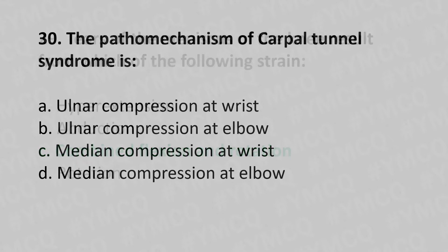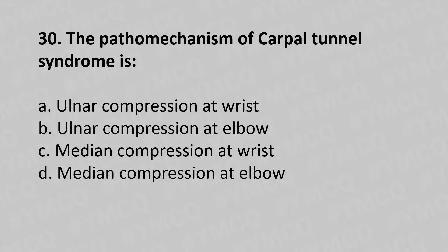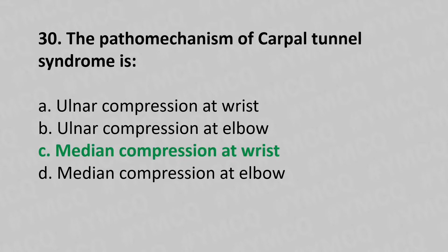Moving to our 30th question: the pathomechanism of carpal tunnel syndrome is option A ulnar compression at the wrist, option B ulnar compression at the elbow, option C median nerve compression at the wrist, option D median nerve compression at the elbow. The answer is option C median nerve compression at the wrist.